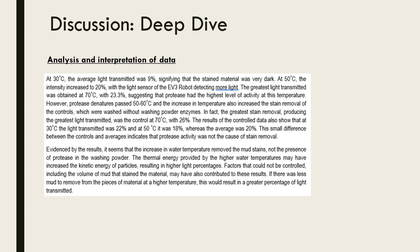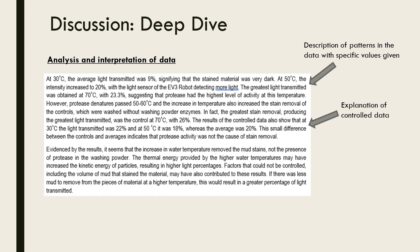Here is an example of this part of the discussion. The student begins by describing patterns found in their data and gives specific values — for example, at 30 degrees the average light transmitted was 9%, signifying that the stained material was very dark; at 50 degrees the intensity increased to 20%, with the light sensor of the EV3 robot detecting more light. The student then explains the controlled data, concluding that due to the lack of difference between the controlled and test data, protease activity was not the cause of stain removal. Finally, the student explains these results using relevant biological concepts, discussing the effect of temperature on stain removal as opposed to enzyme activity. The only thing missing from this exemplar is a link to the hypothesis — make sure you don't forget to include this.